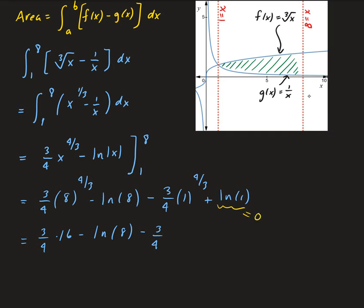Simplifying, we have 3/4 times 16 minus 3/4, which gives us 12 minus 3/4, or 45/4, minus natural log of 8. So the area of our shaded region is 45/4 minus natural log of 8.